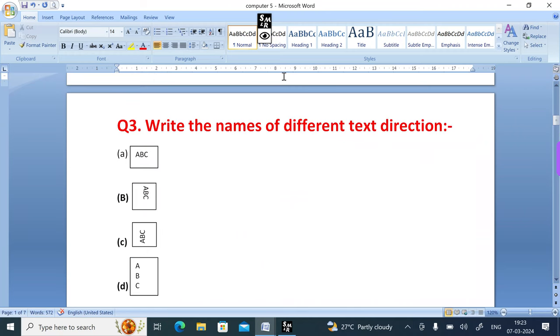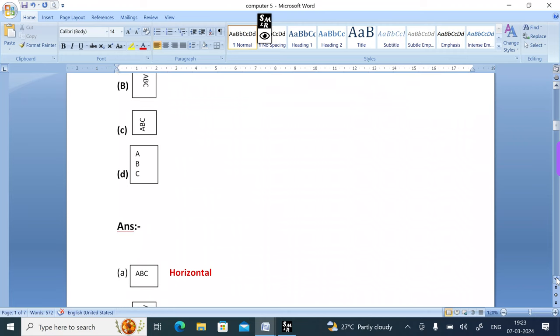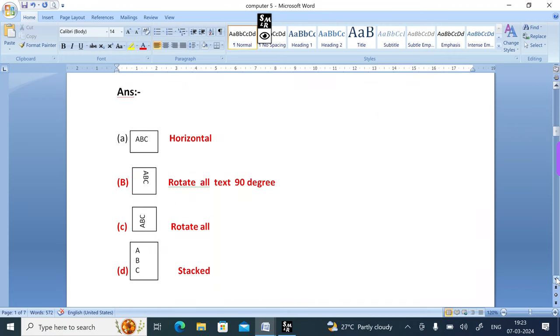Next question: Write the name of different text directions. Some direction options are given with ABC written in different directions. Let's check the answers: First is ABC which is called horizontal, B is rotate all text 90 degrees, C is rotate all, and D is stretched.